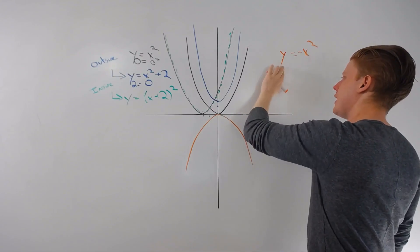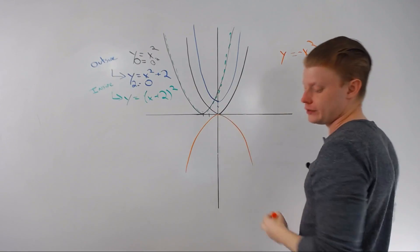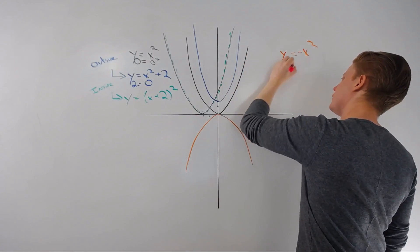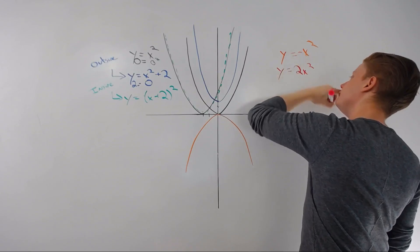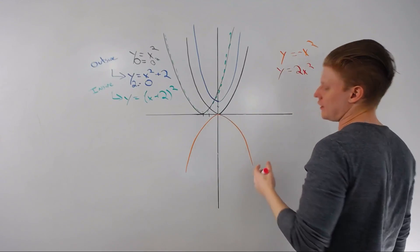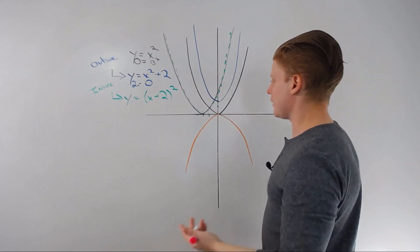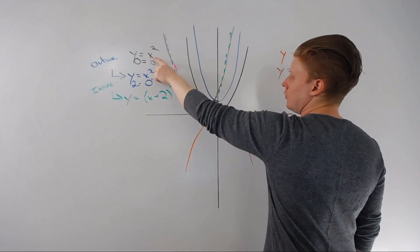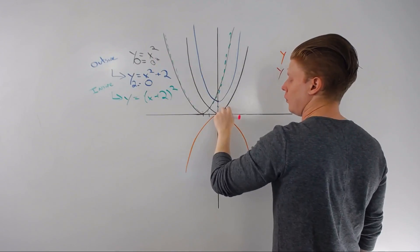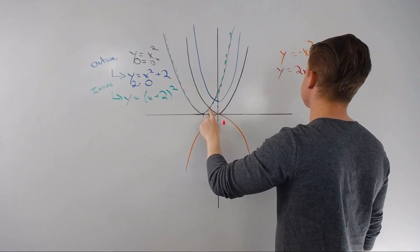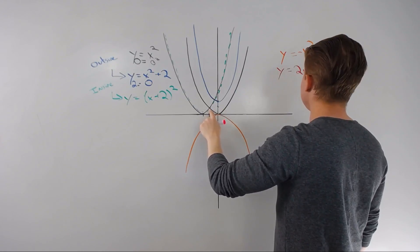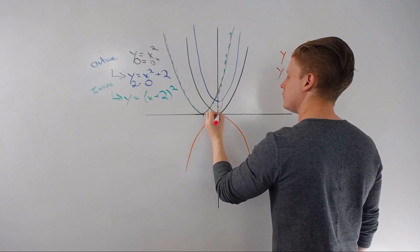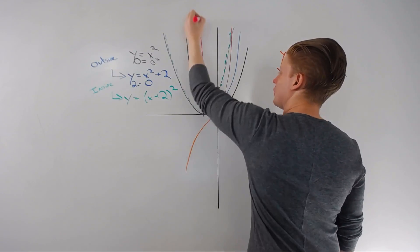And finally, if I put a coefficient in front of the x, well what happens when I plug in zero for x? Nothing, it still spits out a zero. But when I plug in one for x, over here it's one squared is one, so it'd have one and a negative one, but on this one I'm going to double it, so it's literally going to go up twice as fast.